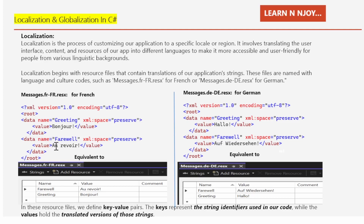Similarly, we have another data element where the name attribute is 'farewell' and the value is 'Au revoir', meaning bye. In the German resource file, the name 'greetings' has the value 'Hallo', and the name 'farewell' has the value 'Auf Wiedersehen', meaning goodbye. So the German and French translated words are kept in these resource files.